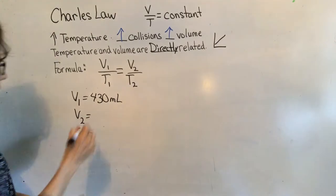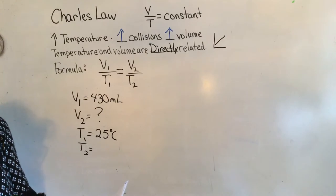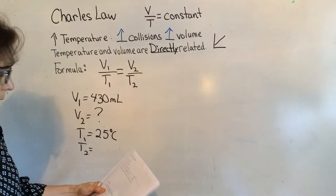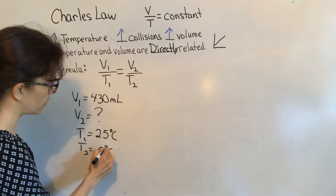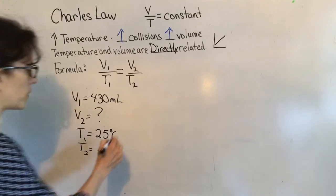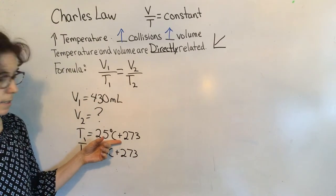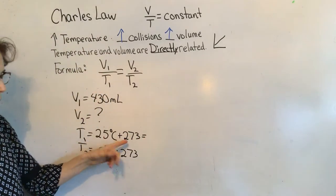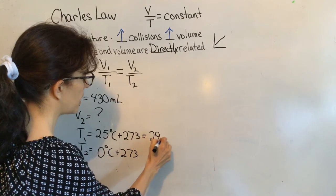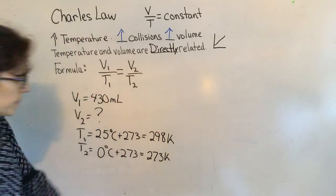V2 is unknown — put a question mark. T1 is 25 degrees Celsius, and T2 is zero degrees Celsius, so the temperature is going down. Before we plug in these numbers, we can never use temperature in Celsius — we need to convert to Kelvins by adding 273. So 25°C becomes 298 Kelvins and 0°C becomes 273 Kelvins.